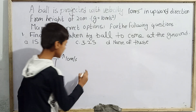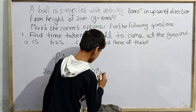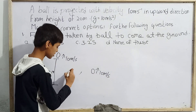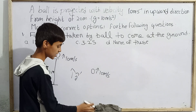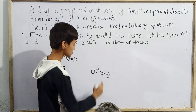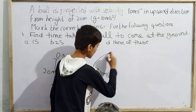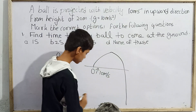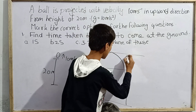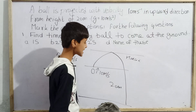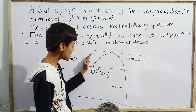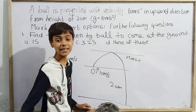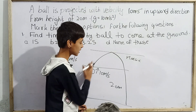Let me make a diagram. The ball is thrown with 10 meters per second in the upward direction — that is 10 J-cap. This is vertical motion, not projectile motion. The ball first goes up and then comes back down. Up to time T-naught it returns to the same position, so the displacement from zero to T-naught is zero. The total displacement of the ball is minus 20 meters — because it returns to the ground, which is in the minus J-cap direction.